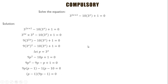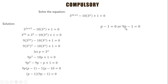We use the zero product principle to obtain: either (p − 1) = 0 or (9p − 1) = 0. That gives us p = 1 or p = 1/9.